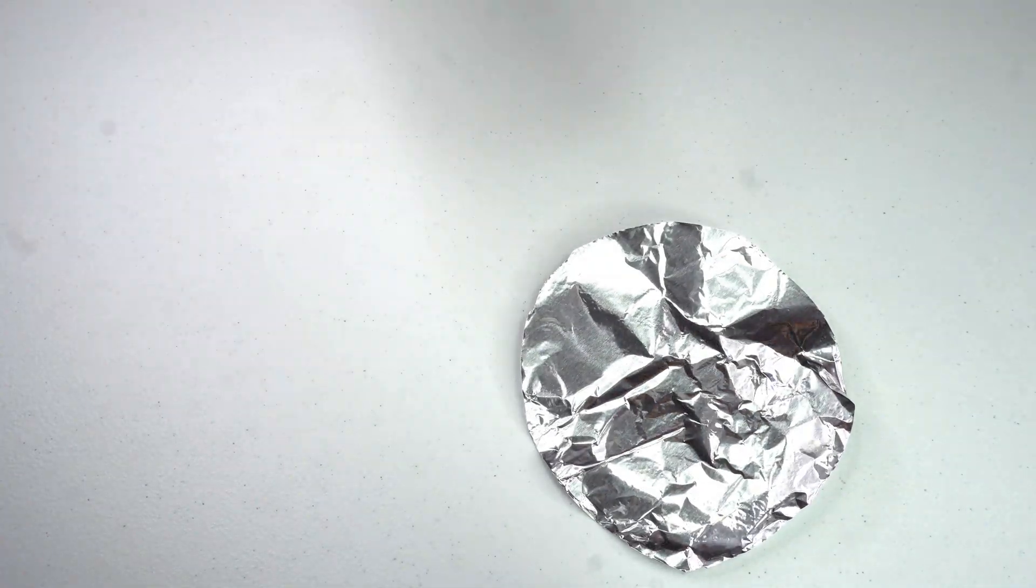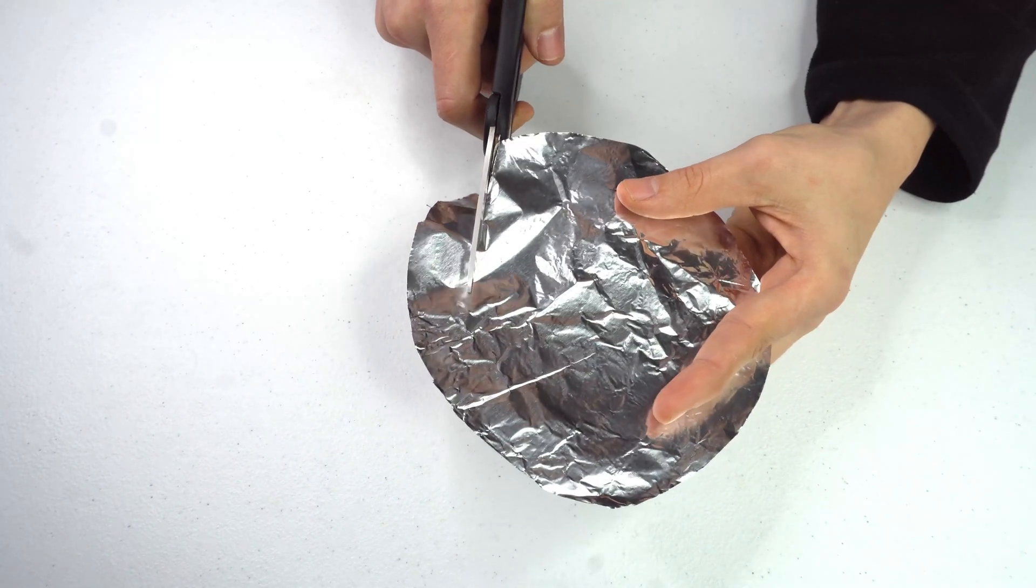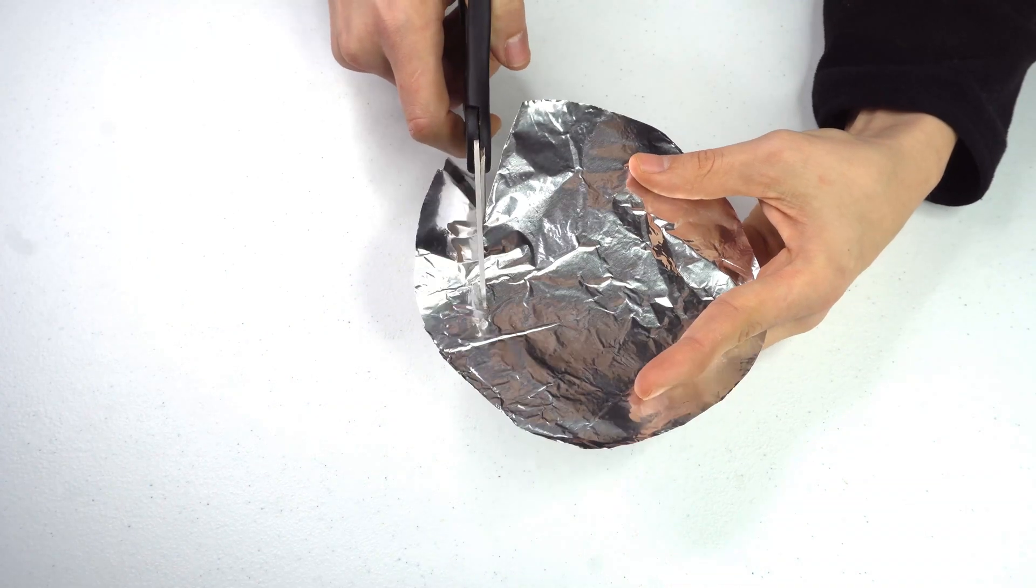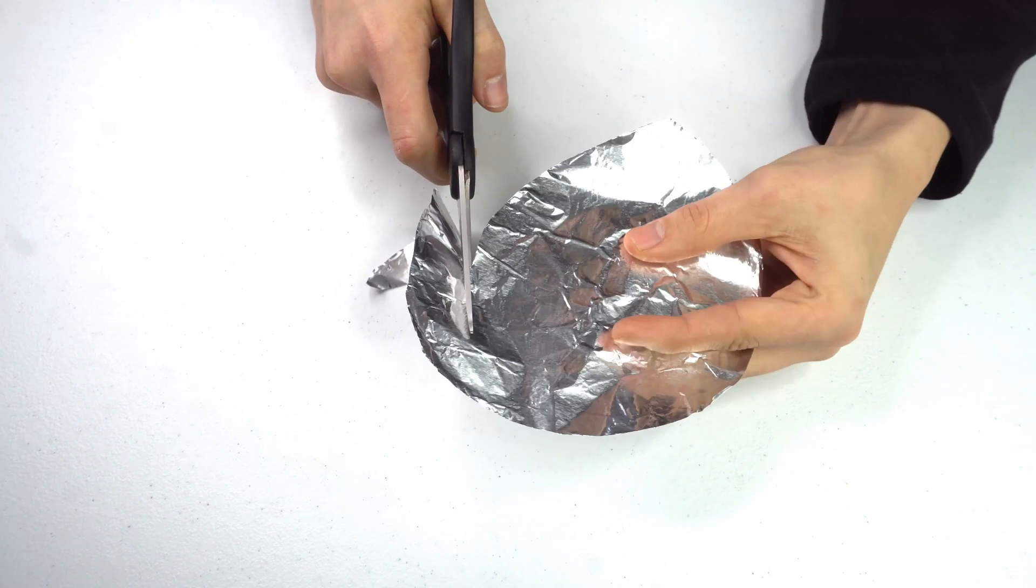After your circle is done, go ahead and flatten it out some more, and then start cutting that circle again, staying about an inch out from the outsides. Just keep going round and round until you get a spiral-looking thing like this.